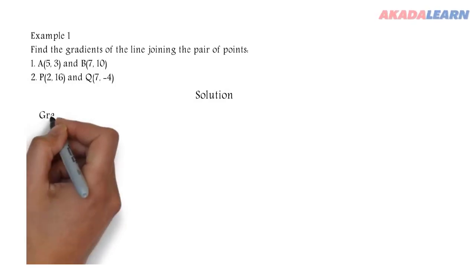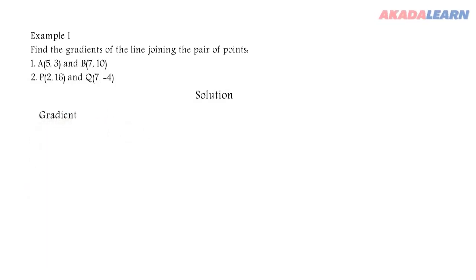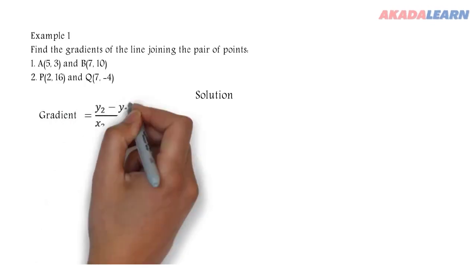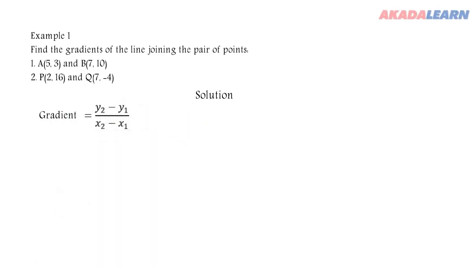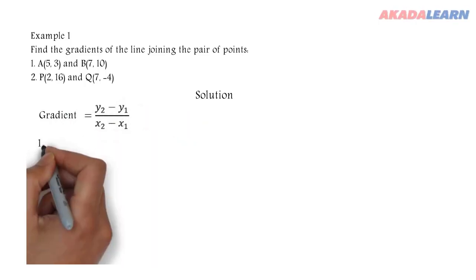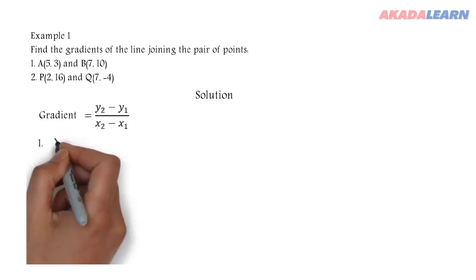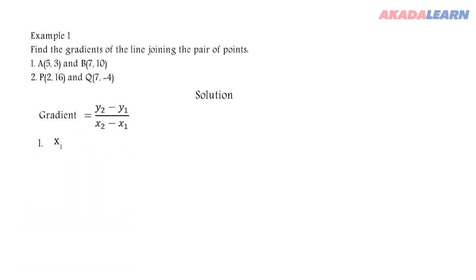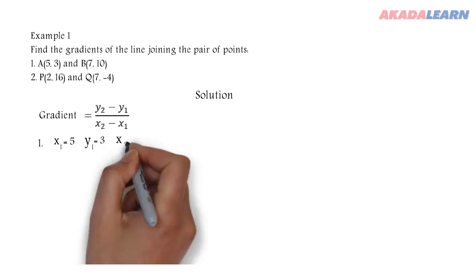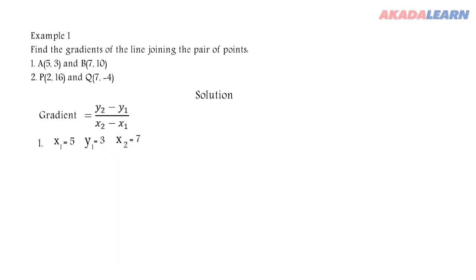First we write our formula: gradient equals y₂ minus y₁ over x₂ minus x₁. Now our x₁ and y₁ will be gotten from point A, so x₁ is 5, y₁ is 3. x₂ and y₂ will be gotten from point B, so x₂ is 7 and y₂ is 10.